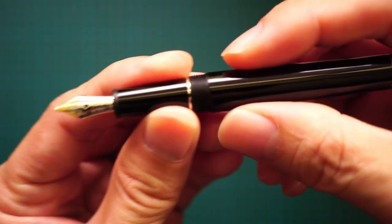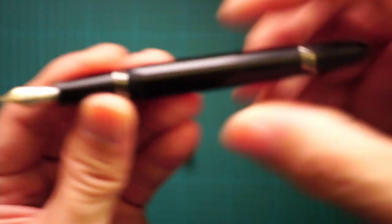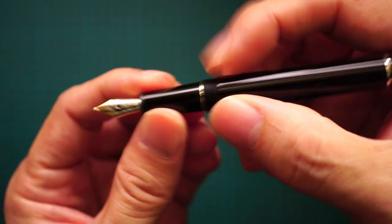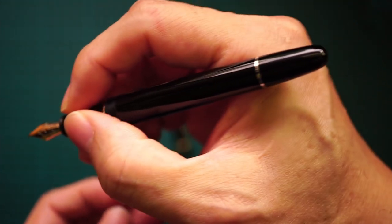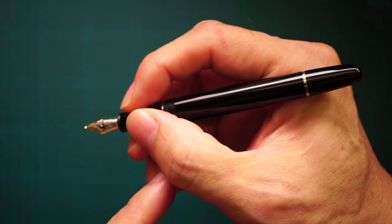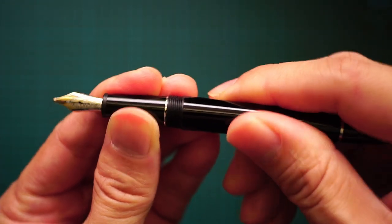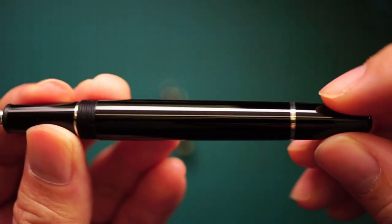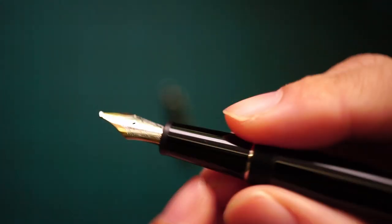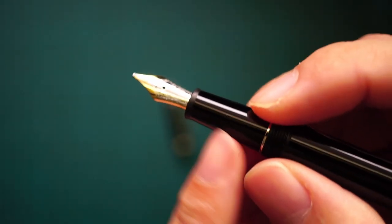The actual barrel of the pen is very slender and very small. As you can see when I hold it without posting the cap, it's very short. Looking at the section area, it's reasonably long, decently long, but it's very, very slim.